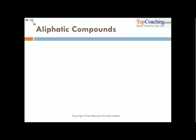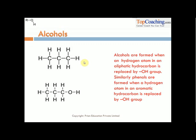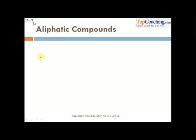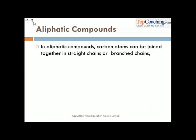Now, what are aliphatic compounds? Aliphatic compounds are the compounds we saw a while back. Carbon atoms and hydrogen atoms when joined together in either straight chains or branched chains are known as aliphatic compounds. For example, here we see a straight chain aliphatic compound — propane.